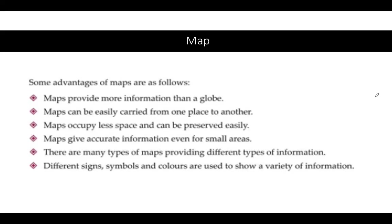The advantages of maps: maps provide more information than a globe and give detailed information. Maps can be easily carried from one place to another, which is not possible for the globe. Maps occupy less space and can be preserved easily. Maps give accurate information even for small areas, and different signs, colors, and symbols allow us to understand a huge variety of information.